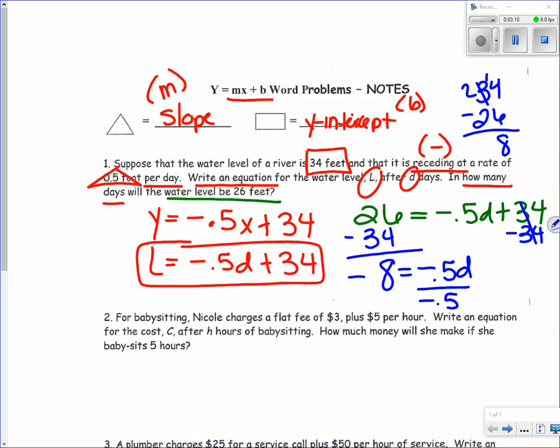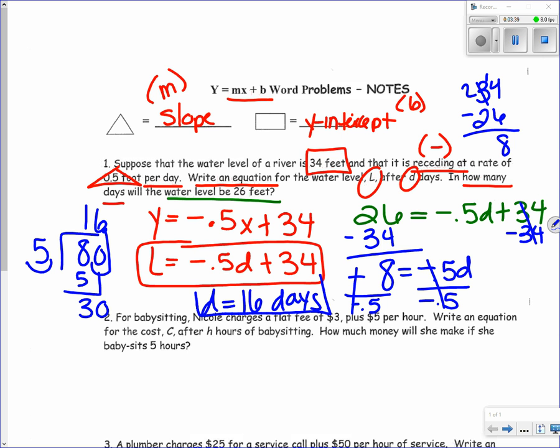Divide by negative 0.5. The negatives cancel to become positive. So 8 divided by 0.5: move the decimal one over, 5 goes into 80 sixteen times. So D equals 16 days. At 16 days, the water level will be 26 feet.